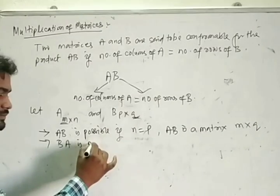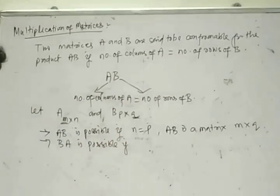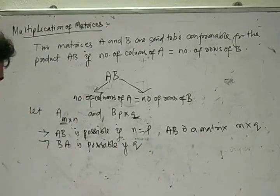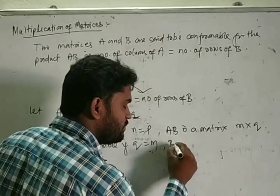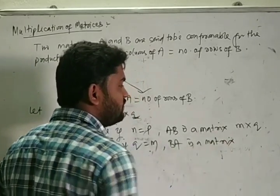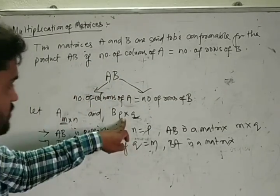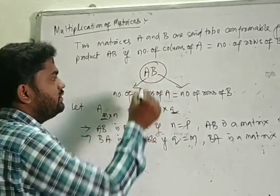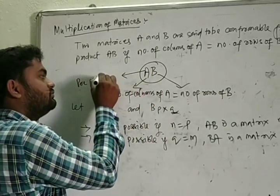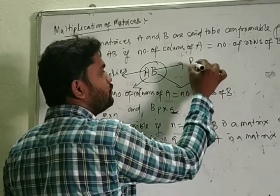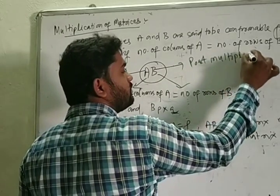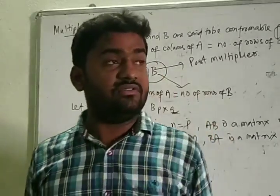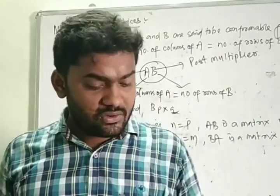Similarly, the product BA is possible when the number of columns of B equals the number of rows of A, meaning q equals m, and the product BA is a matrix of order p×n. In the product AB, A is called the pre-multiplier and B is called the post-multiplier. The product of two matrices is possible when the number of columns of the first matrix equals the number of rows of the second matrix.